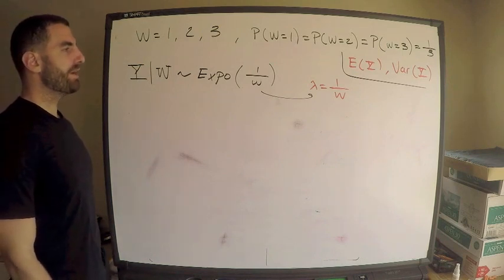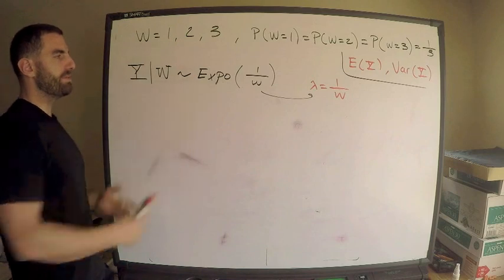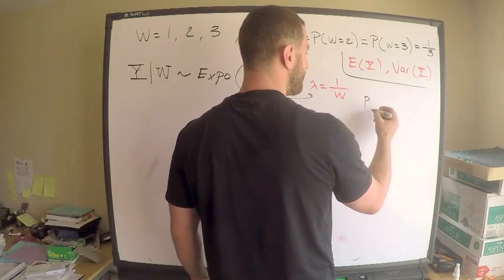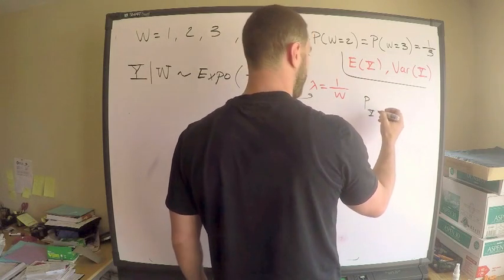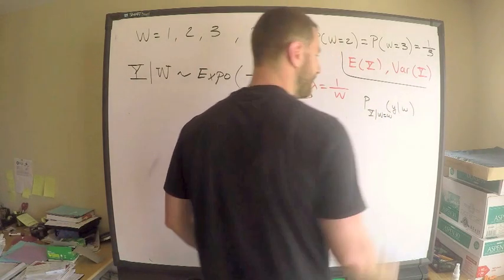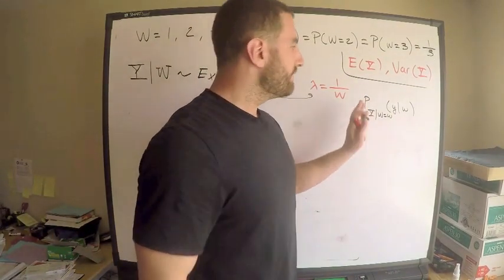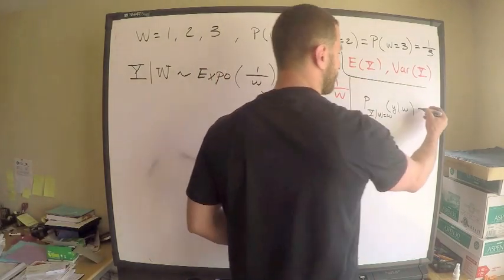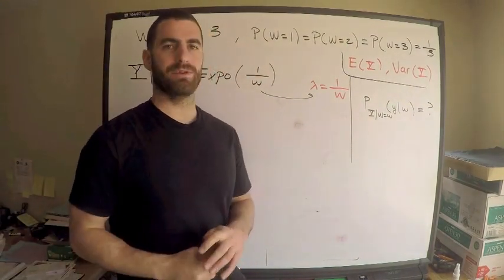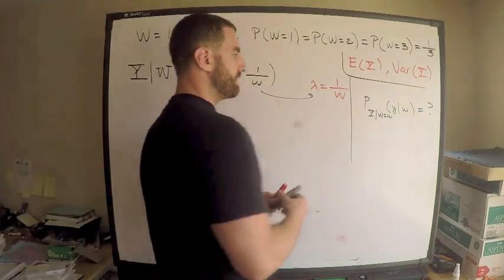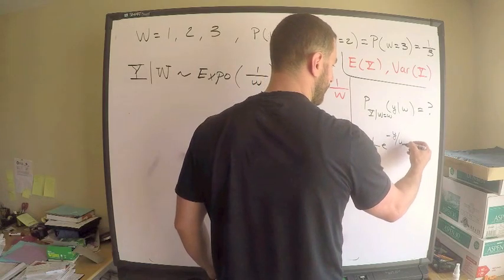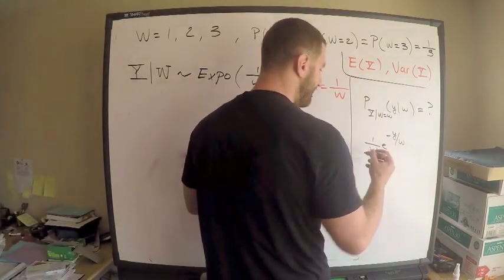You could write down the conditional PDF if you want. The conditional PDF — the probability of Y given W equals w — since it's exponential with mean W and lambda is one over W, this is exactly (1/w) times e to the negative y over w. That's the conditional PDF.